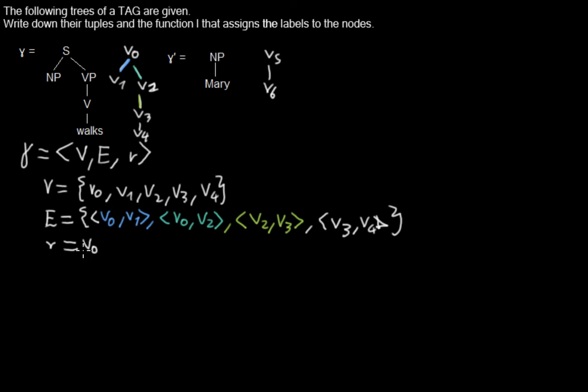Now we are writing down the function L that labels the node. If we put in something like V0, the function will give back the label of the node V0. In this case it's S. Then we have the label of V1, it's NP.